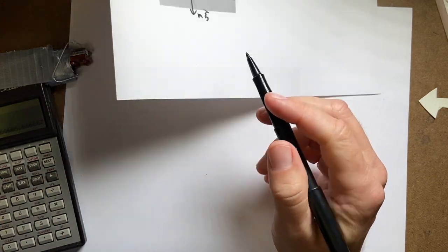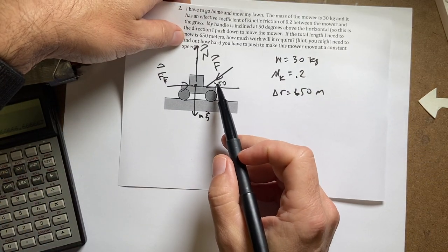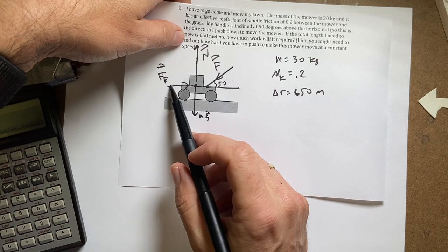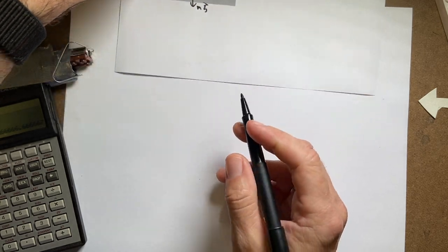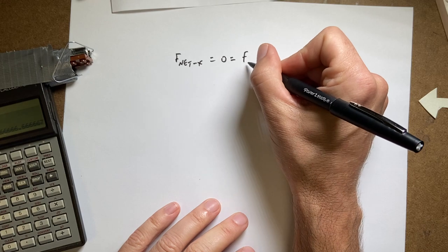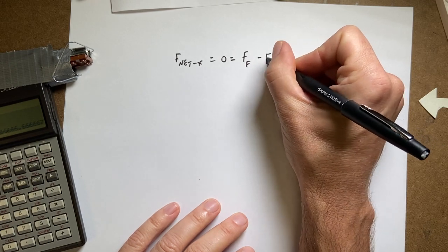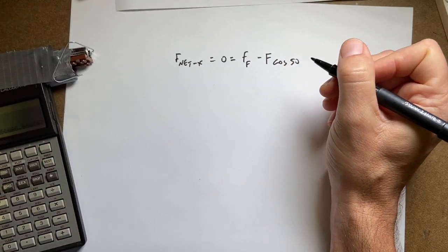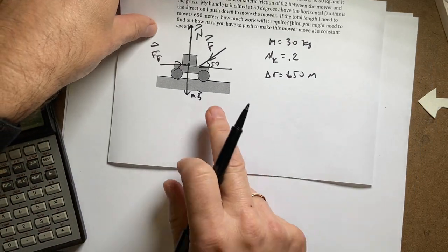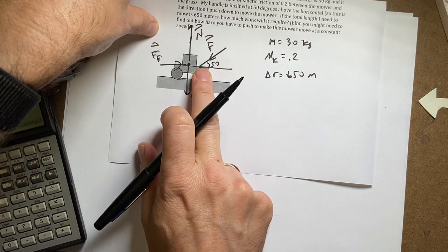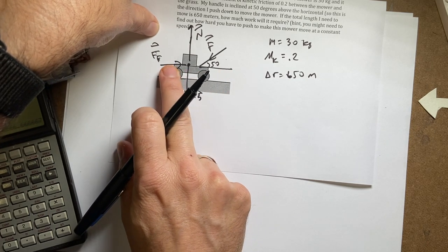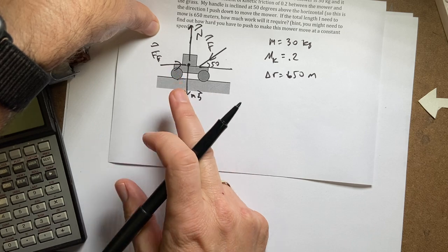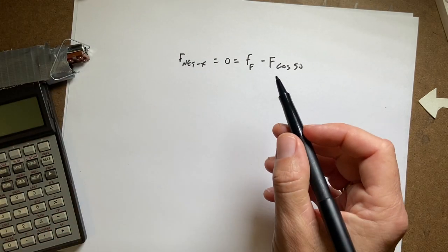Okay, so let's say the following: f net x equals zero. And that's going to be equal to the component of this force in the negative x direction and friction in the positive x direction. So I'm going to get f friction minus the force I push with times cosine of 50. So you see here, that's my horizontal component of the force pushing. And that's the backwards pushing friction force. And they have to be the same.